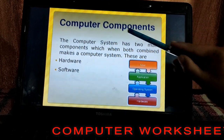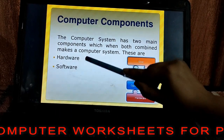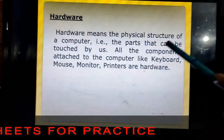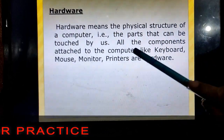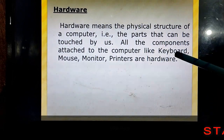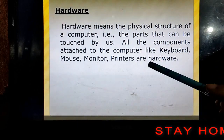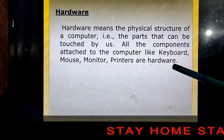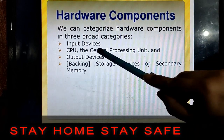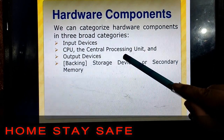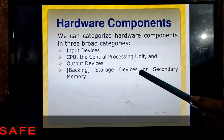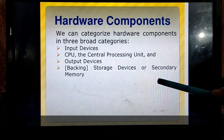The basic computer components are hardware and software. Hardware means the physical structure of the computer, i.e., the parts that can be touched by us. For example, keyboard, mouse, monitor, and printers — these all are known as hardware. Hardware components are input devices, CPU (central processing unit), output devices, and storage devices or secondary memory.